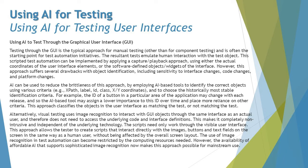Image recognition helps identify objects and clicks on the visible image when executed. However, screen layout can be a concern — if the screen is maximized or minimized, the size or positioning of the image matters, and if pixels are reduced or blurred it may not work. The use of image recognition in test automation can become restricted by the computing resources needed. However, the availability of affordable AI that supports sophisticated image recognition now makes this approach possible for mainstream use, adding further value on top of what commercial paid tools already offer.